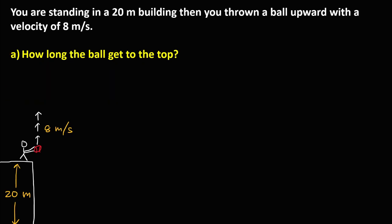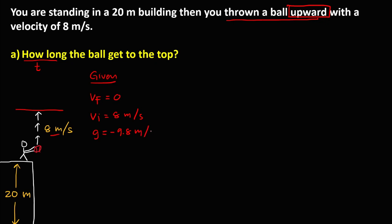To solve for A — how long it takes the ball to get to the top — we list all the given. Since the ball is thrown upward, the final velocity is equal to 0. The initial velocity is 8 meters per second, and gravity is negative 9.8 meters per second squared. Time is the unknown.